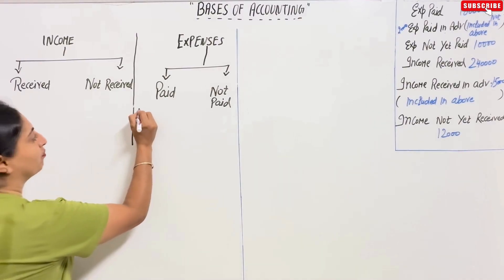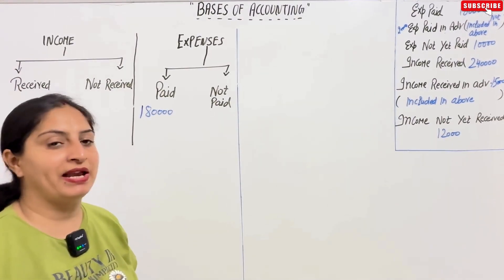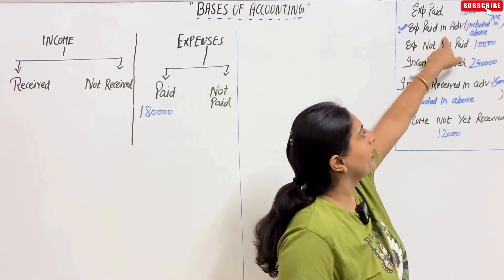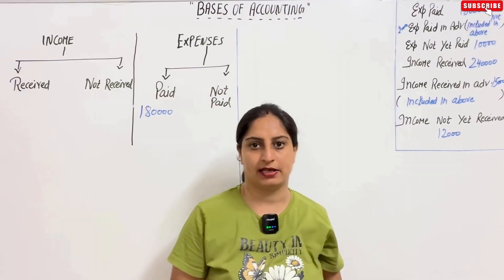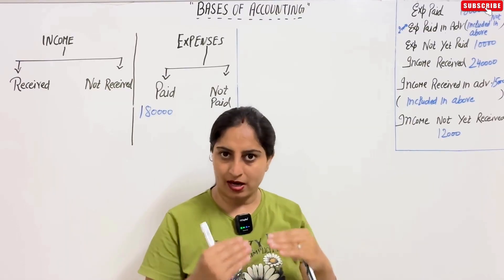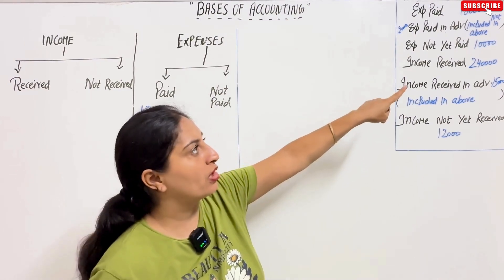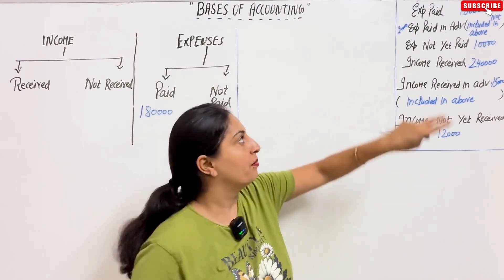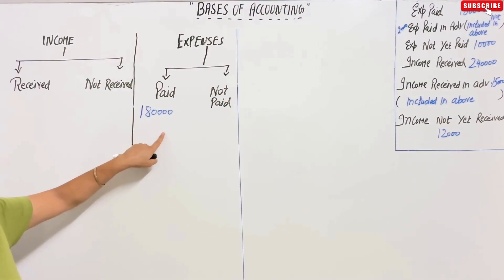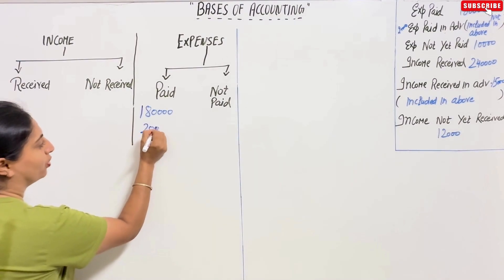Next, expenses paid in advance — twenty thousand. Advance means next year. In the bracket it says 'not included in above,' meaning these expenses were paid this year for next year, so they are not included in current year expenses. We note twenty thousand as NY — N for next, Y for year — meaning next year.